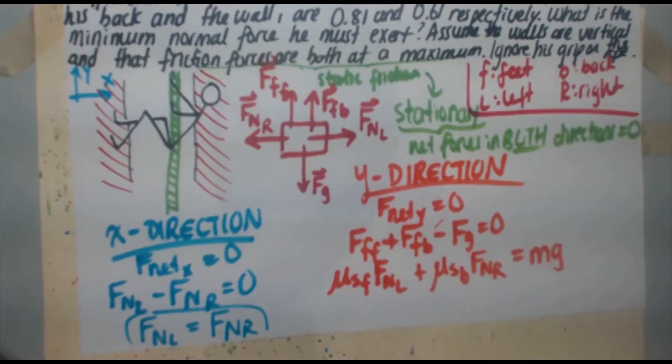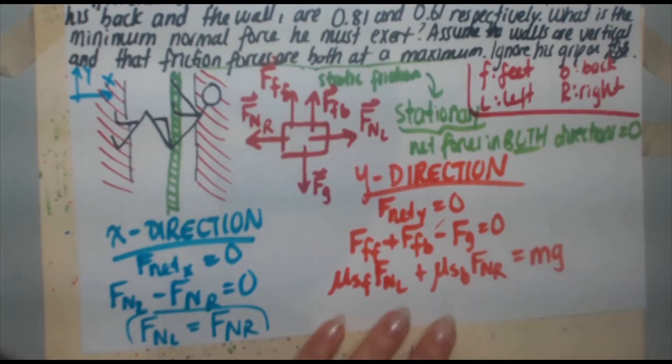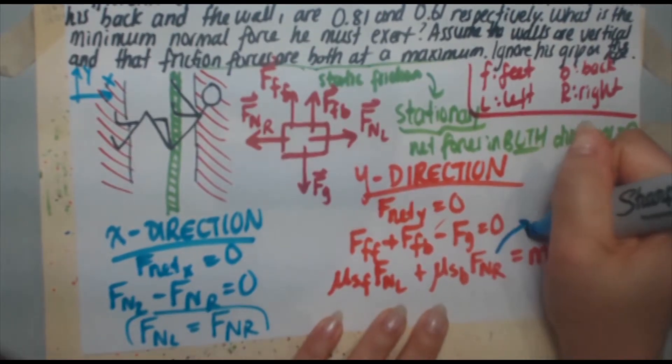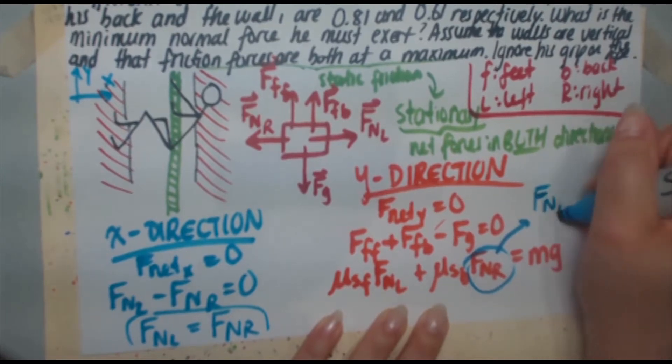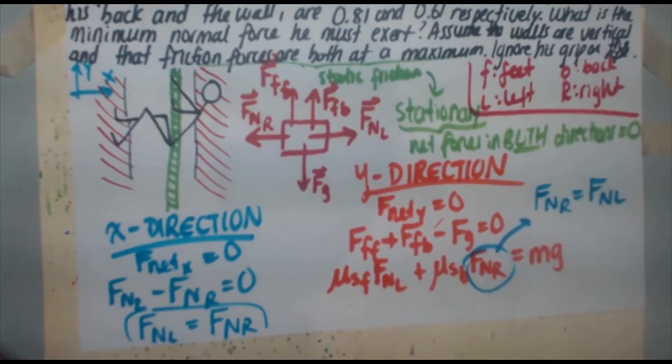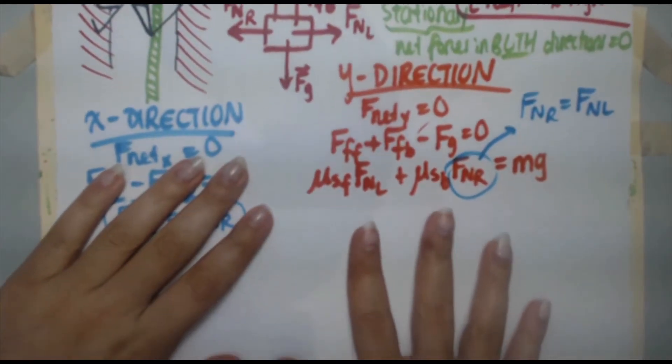Now here's where things get a little simplified. Because we just determined that FNR, FNL equals FNR. So I'm going to do a little substitution here. So I'm going to take FNR and replace it with FNL. So let's keep going.